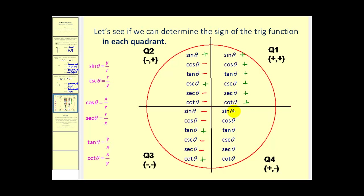In the fourth quadrant, x is positive and y is negative. Since x is positive, cosine and secant are positive. Since y is negative, sine and cosecant would be negative. And lastly, tangent and cotangent involve one x and one y, so they'll be negative.